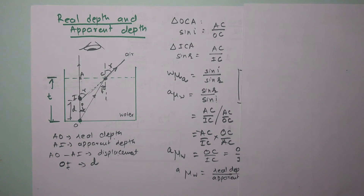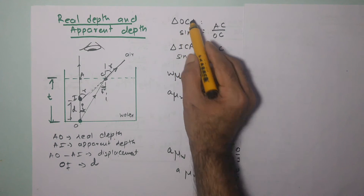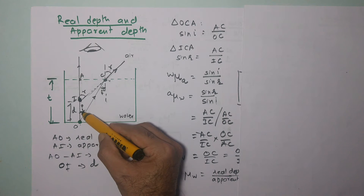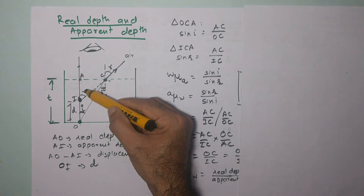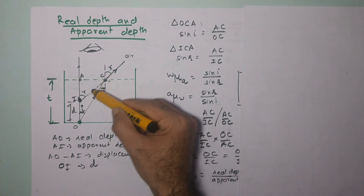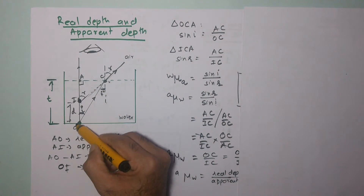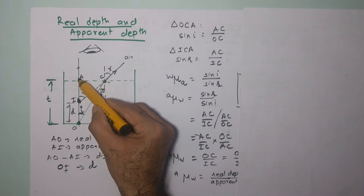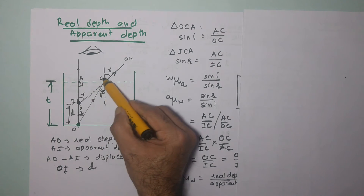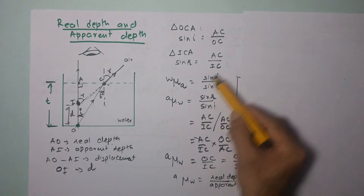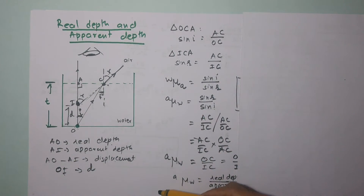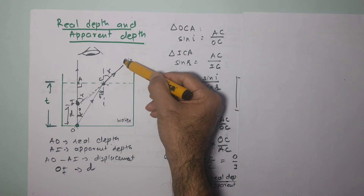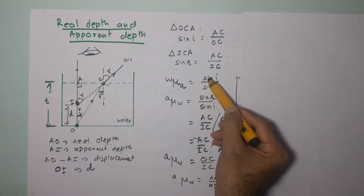Looking at triangle OCA: sine i equals AC upon OC, where OC is the hypotenuse since this is the 90-degree angle. Looking at triangle ICA: sine r equals AC upon IC, where IC is the hypotenuse. We know that the refractive index of the second medium — air in this case — with respect to water is sine i upon sine r.